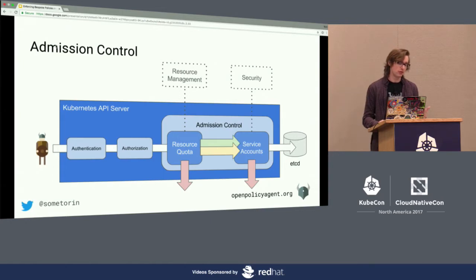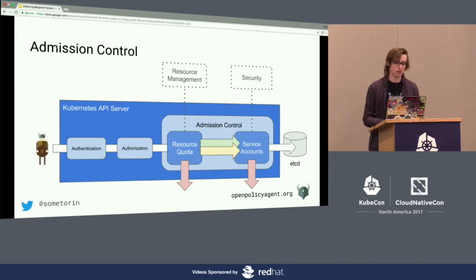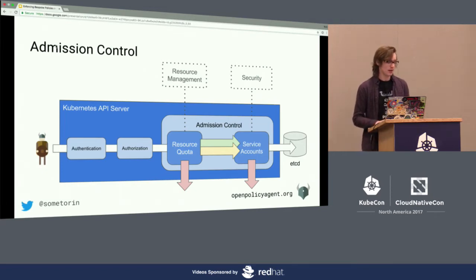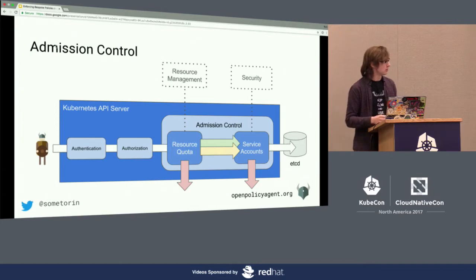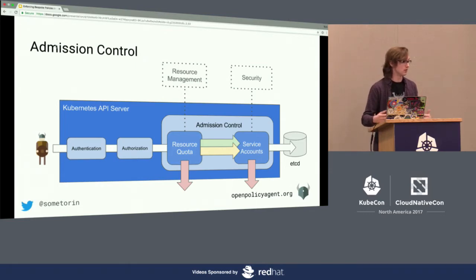Before any request affects etcd or any clients get notified about a state change, these admission controllers run. Their goal is to enforce various kinds of policies around resource management, security, defaulting, and semantic validation. Each admission controller gets a chance to allow the request, modify it and pass it on, or deny it. One important difference from authorization: if a single authorizer allows the request it's allowed, but if a single admission controller denies the request, the request gets denied. It's the last place to enforce policy before resources are created in the cluster.